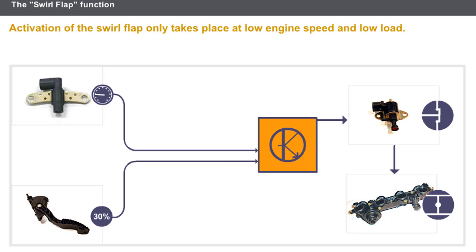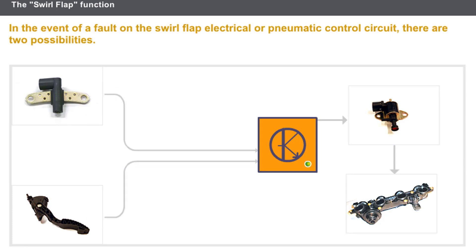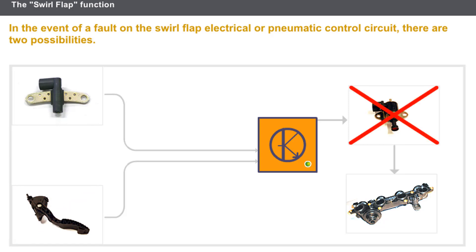You can move the mouse cursor over the components to see the programming used for this function. Any fault on the accelerator pedal position sensor inhibits the function. In the event of a fault on the swirl flap electrical or pneumatic control circuit, there are two possibilities: if the flap is stuck shut, there is a loss of engine power; if the flap is stuck open, engine pollution is slightly increased.